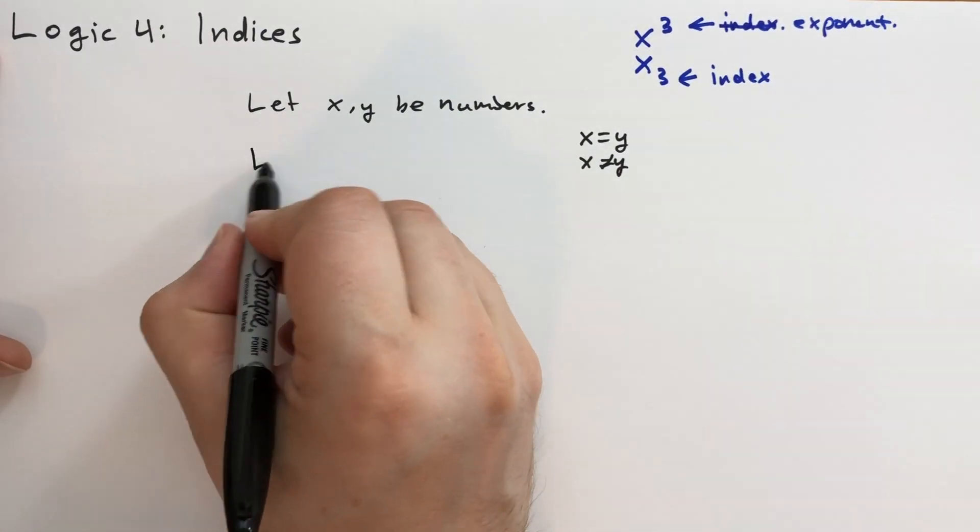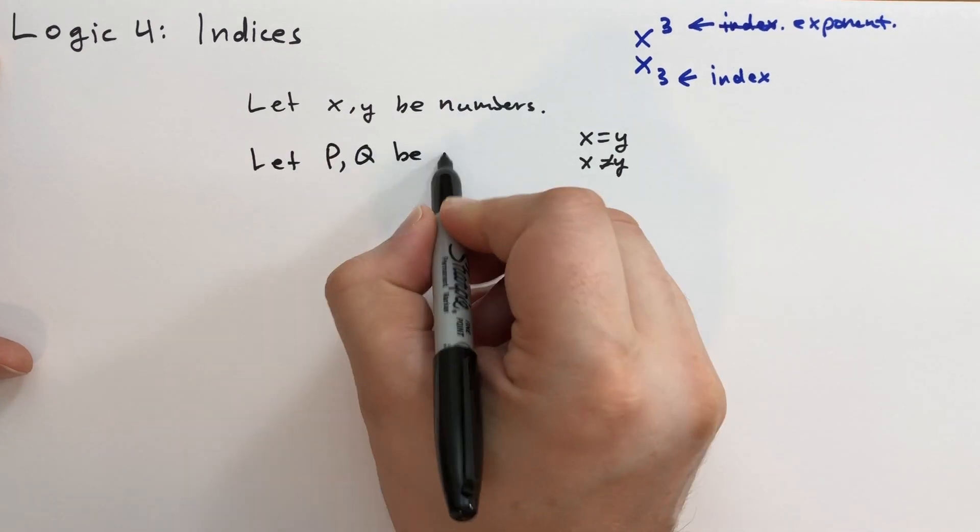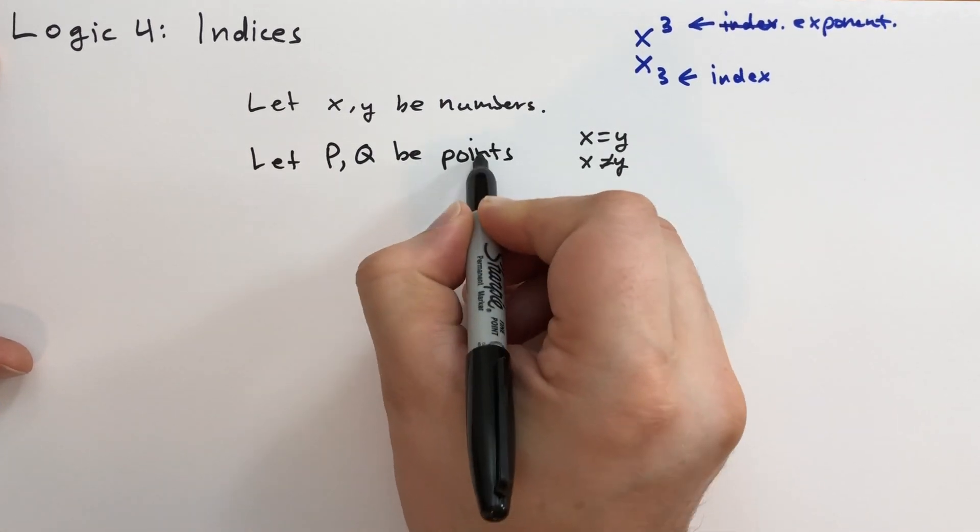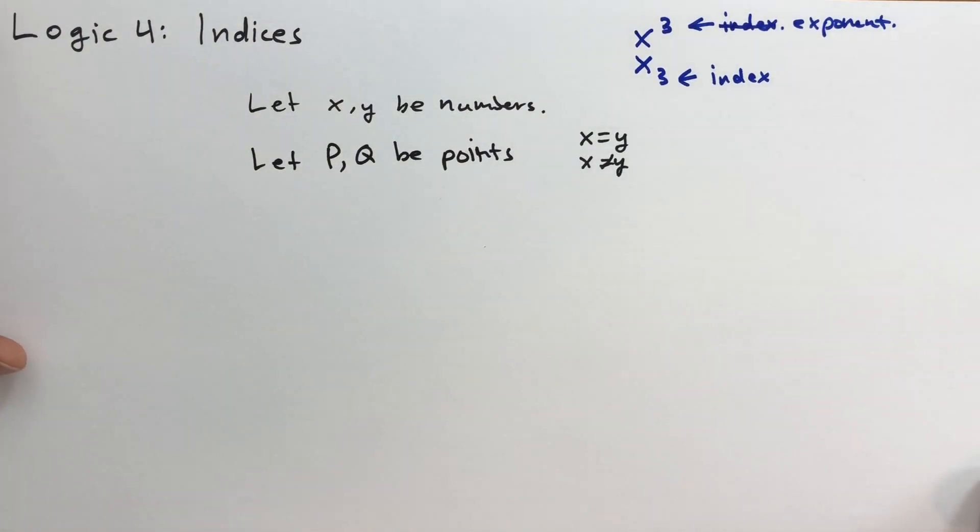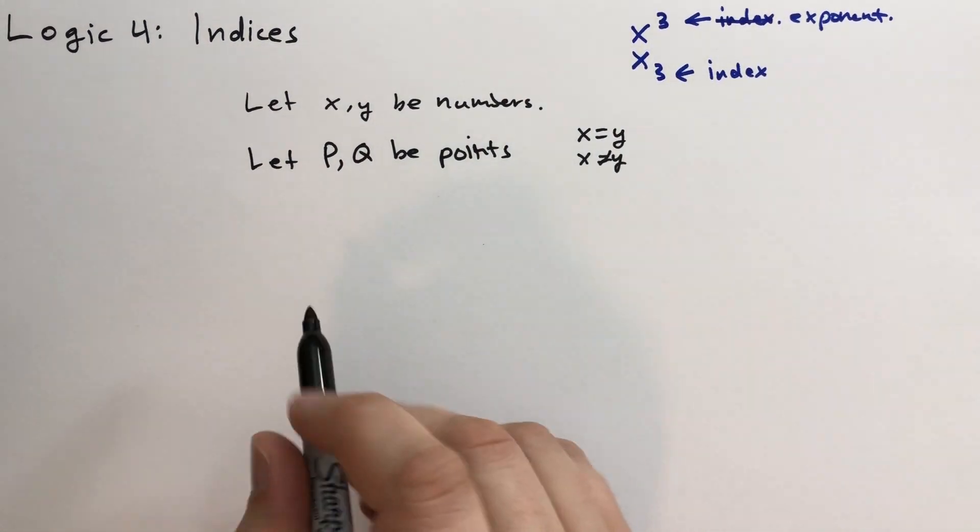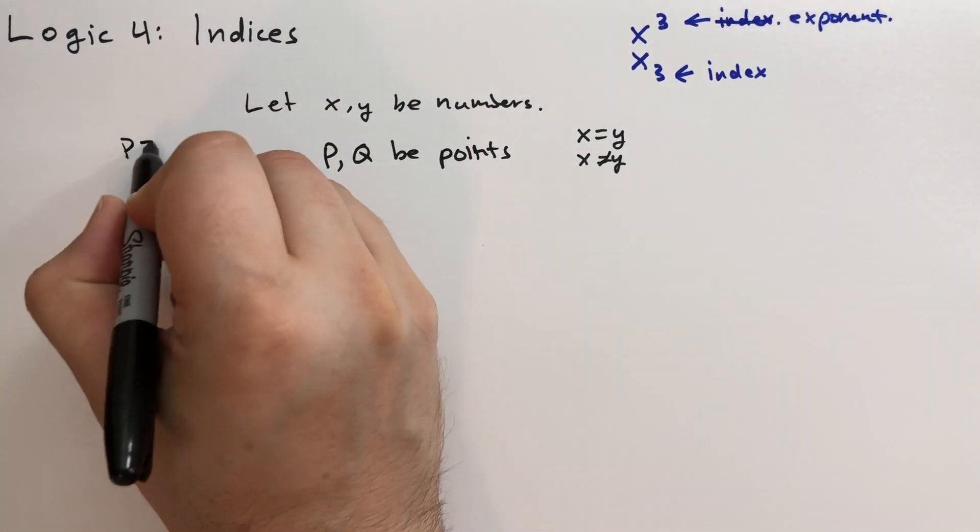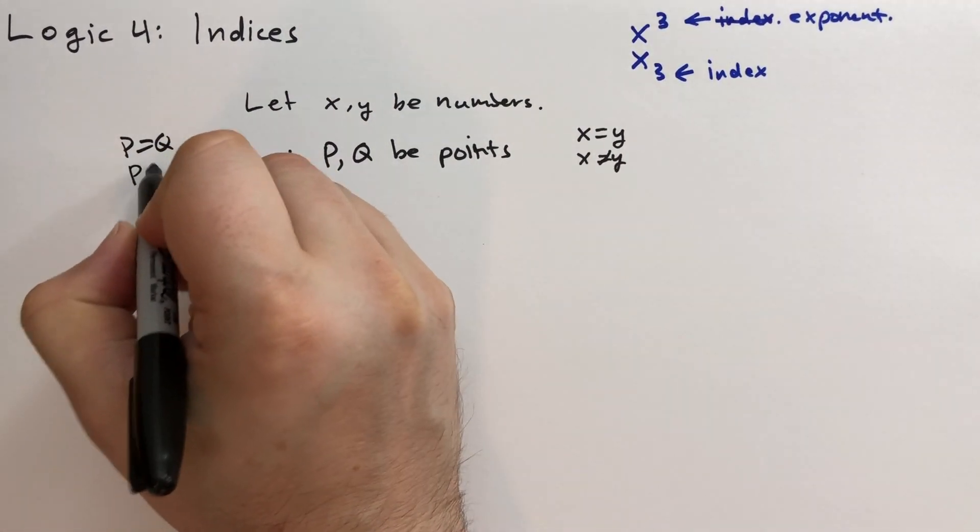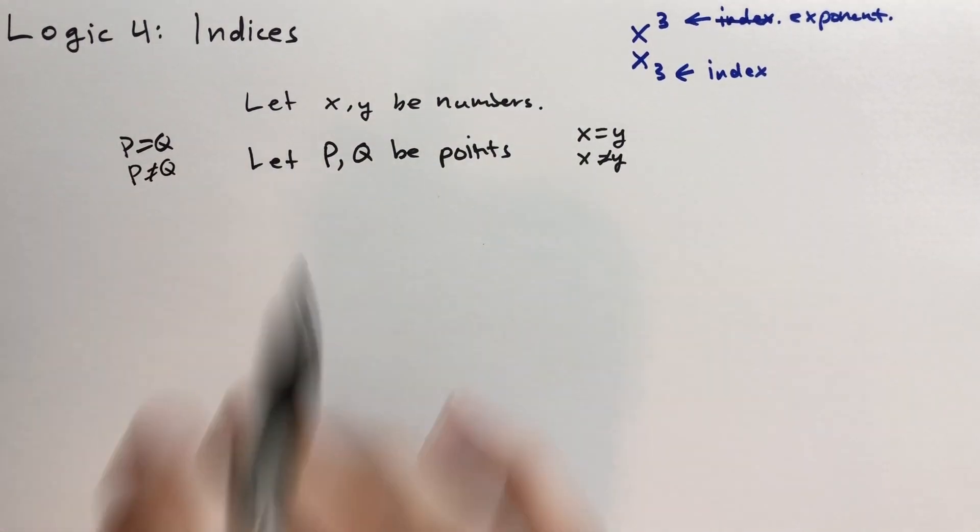We also do things like let P and Q be points. So in the next chapter, we'll be going into intuitive geometry. Analytic geometry comes later. Analytic geometry is using numbers to describe geometry and intuitive geometry is using shapes to describe geometry. So when we say this, also P could be equal to Q. These could be the same points or they may not be the same points.